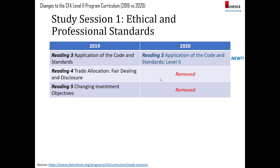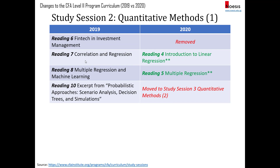For ethics, they have removed readings four and five from 2019 — the ones on trade allocation and changing investment objectives, which were more application and cases. Reading three appears to have been rewritten and is now a new reading.